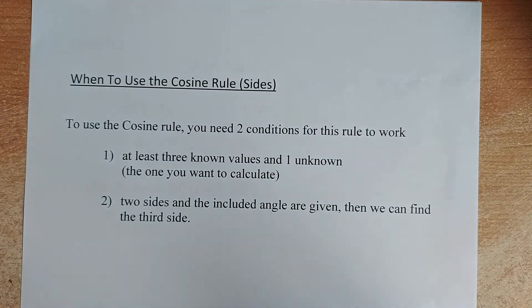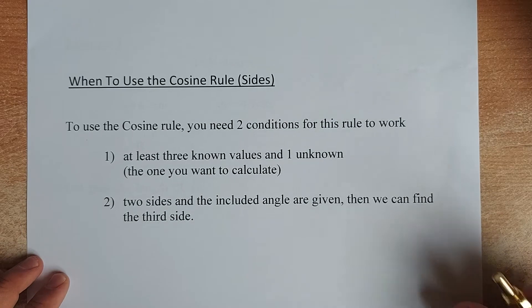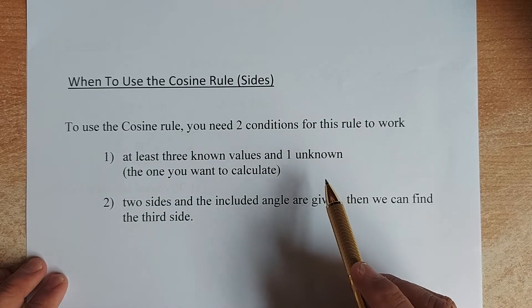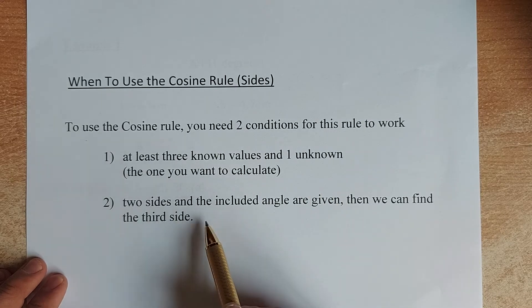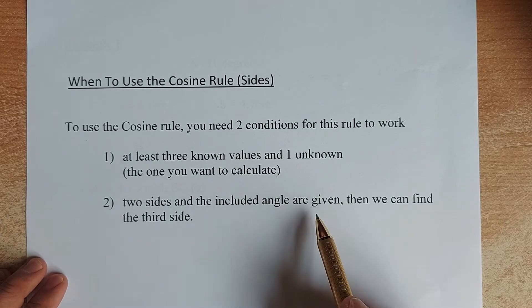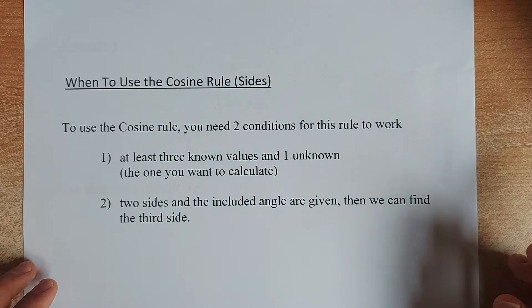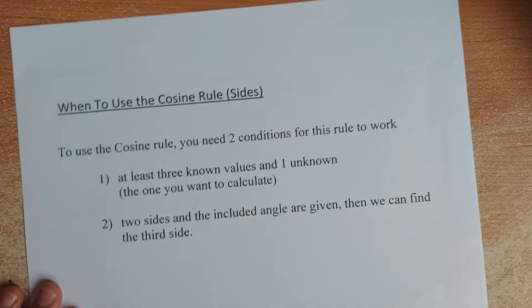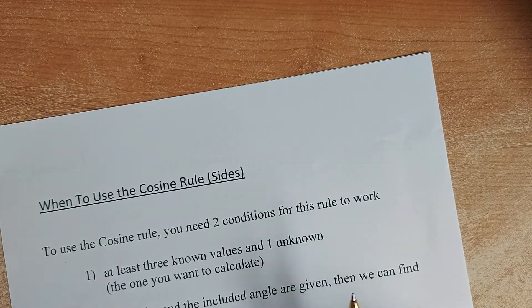The rule that you need to have is that you need to have at least three known values. And the unknown value is the one you're going to find out. And you need to have two sides and the included angle. Then we are able to find the third side. We shall look at the example now.